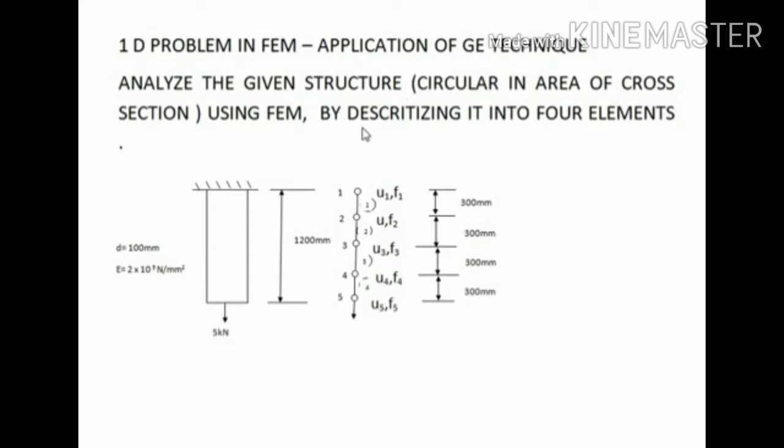Analyze the given structure, which is circular in area of cross section, using FEM by discretizing it into four elements. The structure is subjected to an axial load of 5 kN. The length of the structure is 1200 mm, the diameter is 100 mm, and Young's modulus is 2 × 10⁵ N/mm².